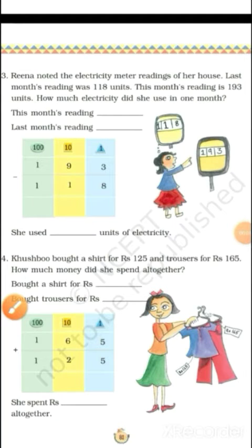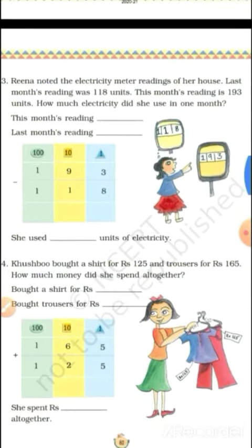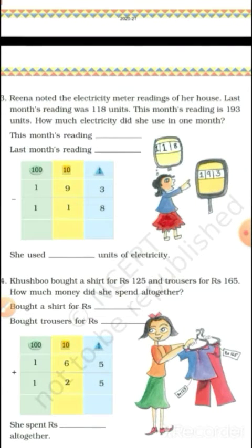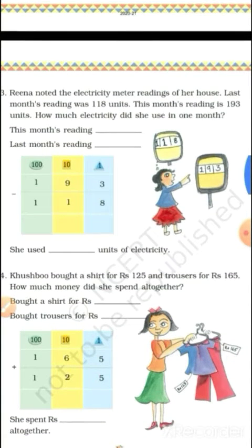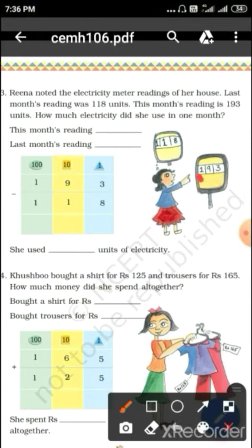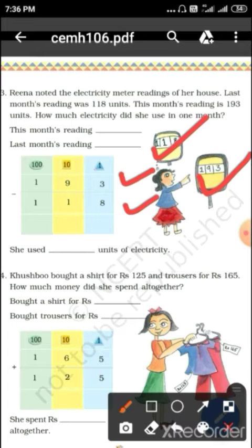Good morning students, today we learn page number 81, chapter 6. In this word problem, Reena noted the electricity meter reading of her house. Last month's reading was 180 units, this month's reading is 193 units. How much electricity did she use in one month? This month's reading is 193 and last month's is 180, so we do subtraction.